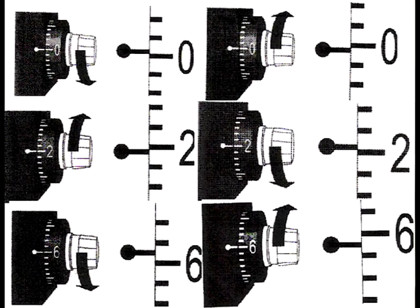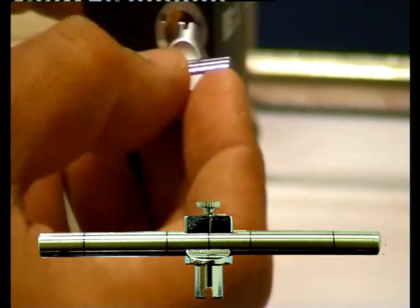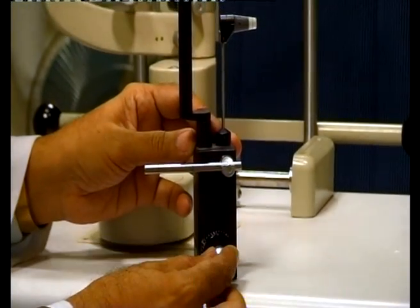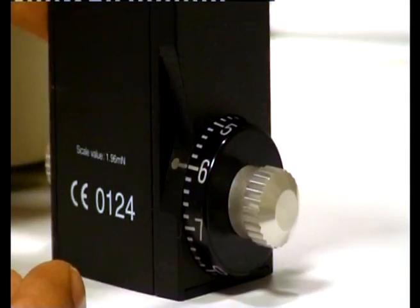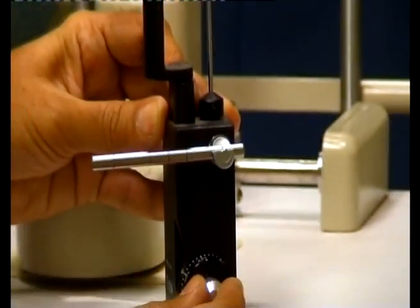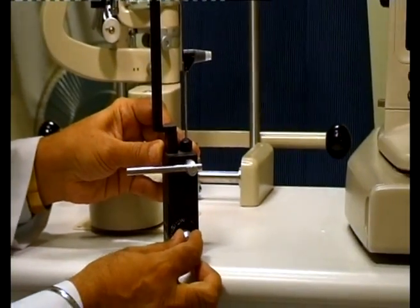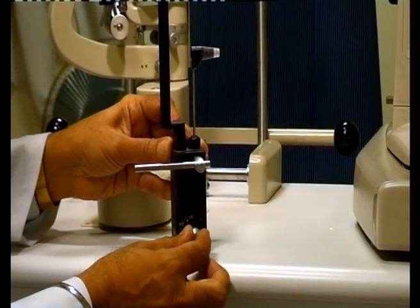Calibration of the instrument should be done once a month. The calibration check is performed at scale readings of 0, 2, and 6. Precise setting of the mark is the key to successful calibration check. The procedure of calibration should be carefully understood by going through the manufacturer's instructions in the manual. If any defect is detected, the instrument needs to be sent to the manufacturer for repair.